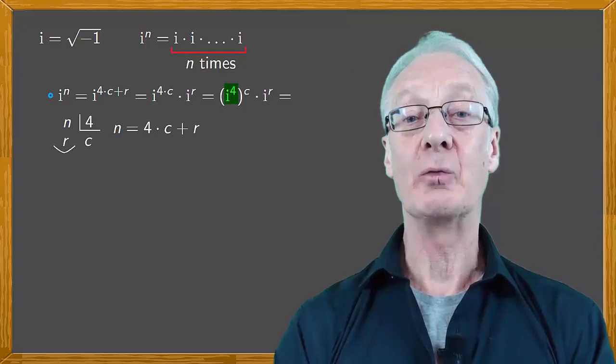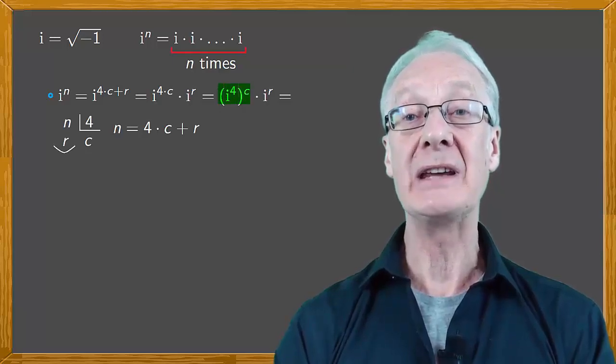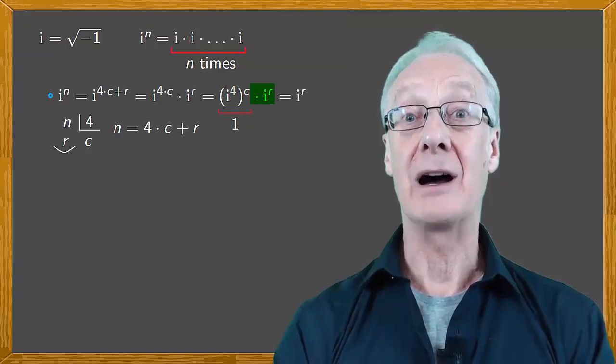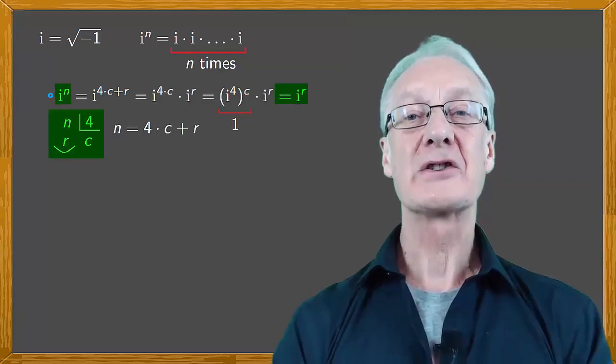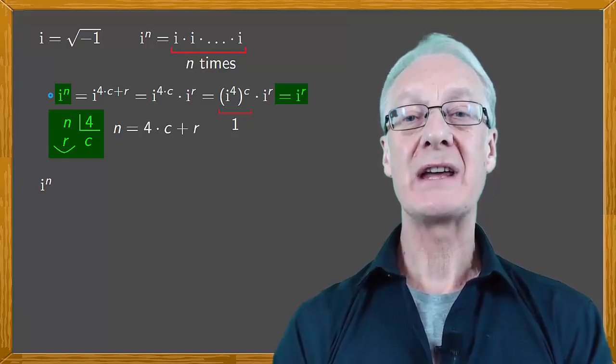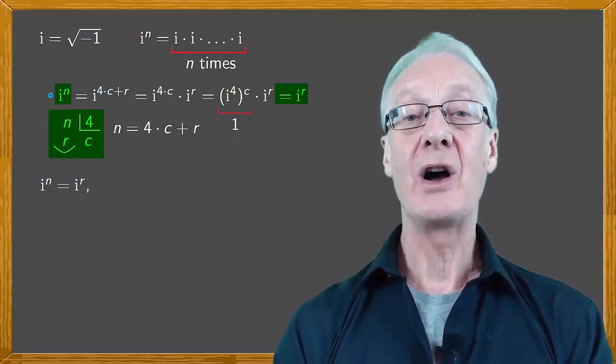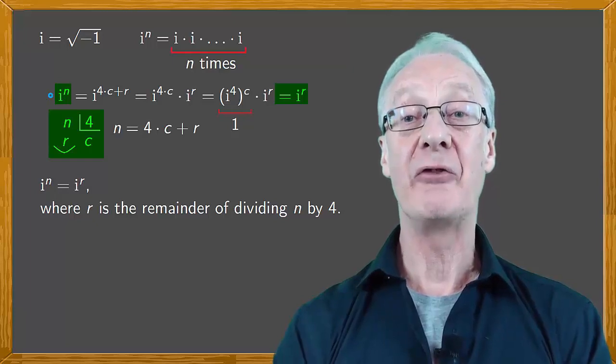i to the four is one, which is raised to the power of c, still giving one, times i to the r, leaving us with i to the r. So i raised to the n is the same as i raised to the r, where r is the remainder of dividing n by four.